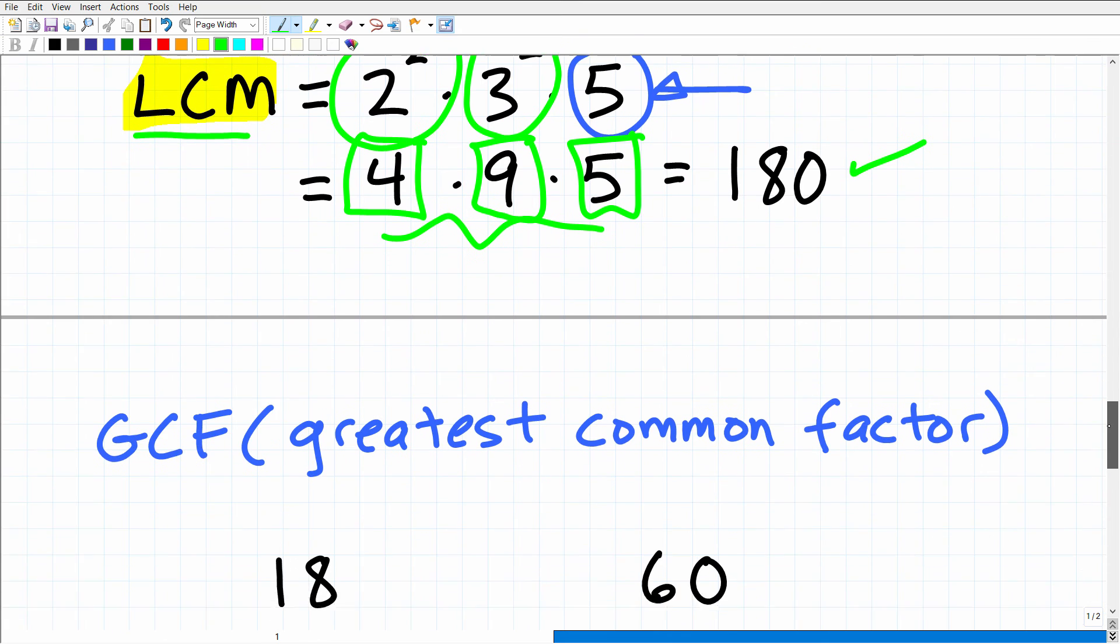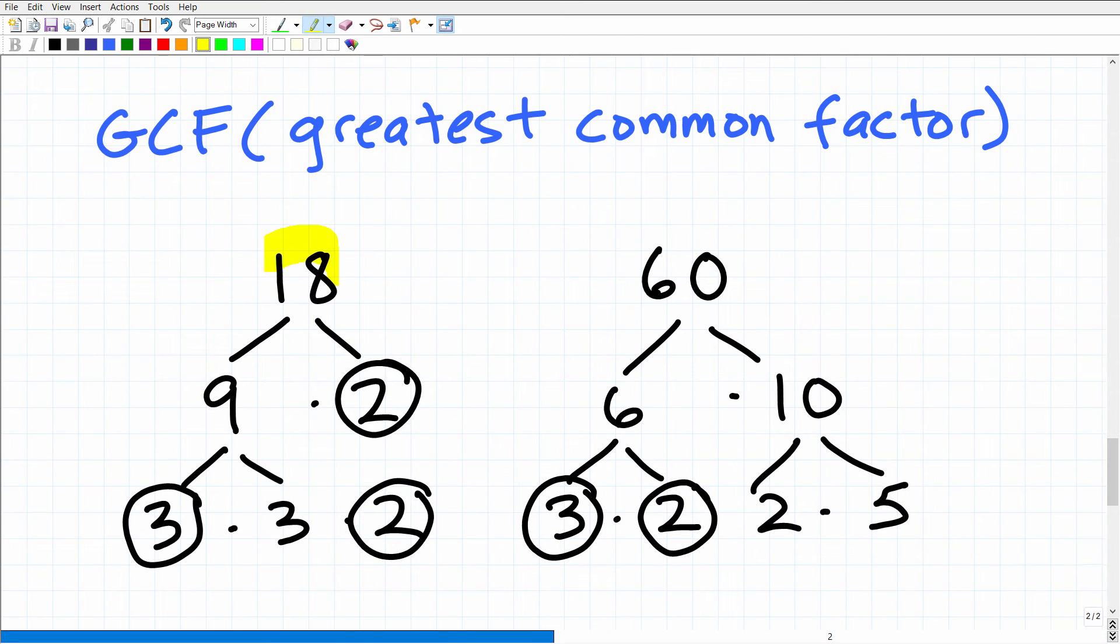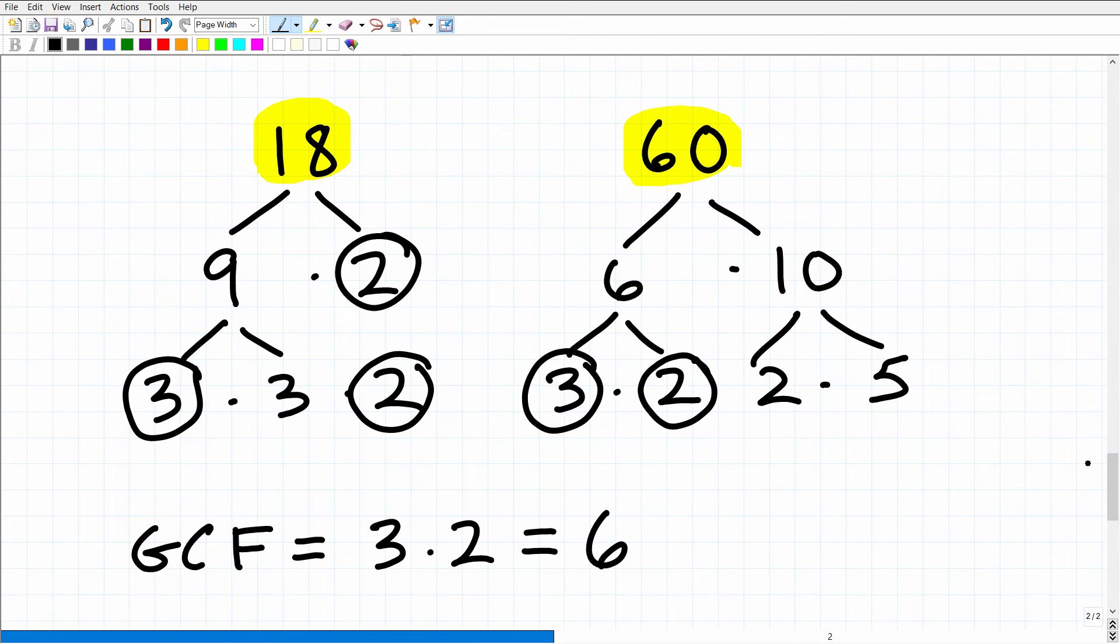So now let's move on to the GCF, the greatest common factor between two numbers. So we have 18 and 60, and just like the LCM, we can understand what the GCF is by just reading the acronym. It's the greatest common factor. So we're looking at common factors, and we want to select the greatest. So we can use the factor tree approach as a really easy way to do this.